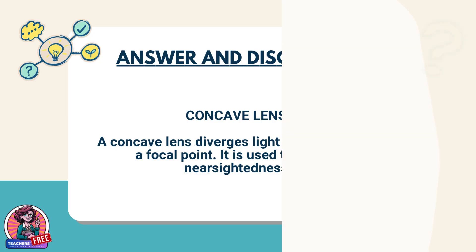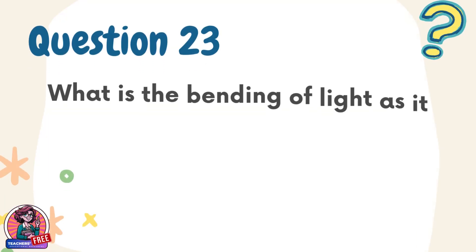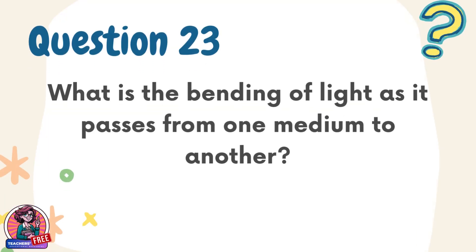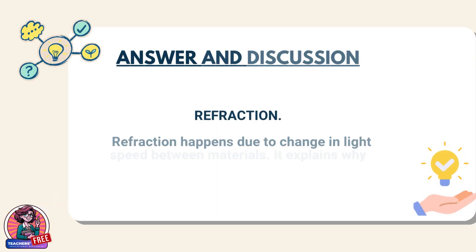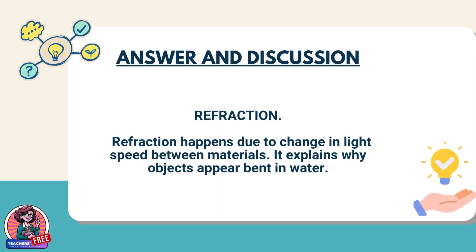Question 23. What is the bending of light as it passes from one medium to another? Answer: refraction. Refraction happens due to a change in light speed between materials. It explains why objects appear bent in water.